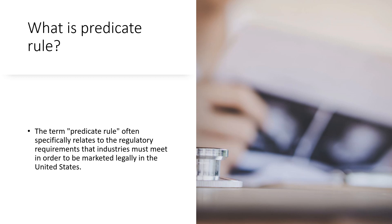Before going into the depth of 21 CFR Part 11 guidelines, we should know what is a predicate rule. The term predicate rule specifically relates to the regulatory requirements that industries must meet in order to be marketed legally in the United States. Predicate means a kind of set of rules or laws that we need to follow if we are working for the United States market.